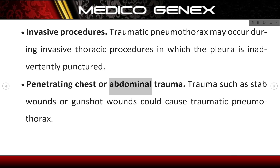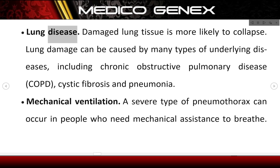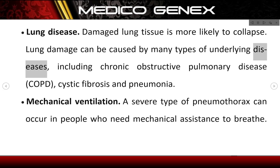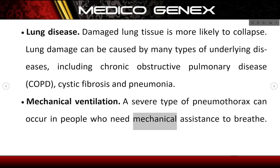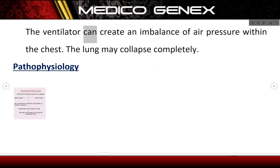Penetrating chest or abdominal trauma — trauma such as stab wounds or gunshot wounds could cause traumatic pneumothorax. Lung disease — damaged lung tissue is more likely to collapse; lung damage can be caused by many types of underlying diseases, including COPD, cystic fibrosis, and pneumonia. Mechanical ventilation — a severe type of pneumothorax can occur in people who need mechanical assistance to breathe, as the ventilator can create an imbalance of air pressure within the chest, and the lung may collapse completely.